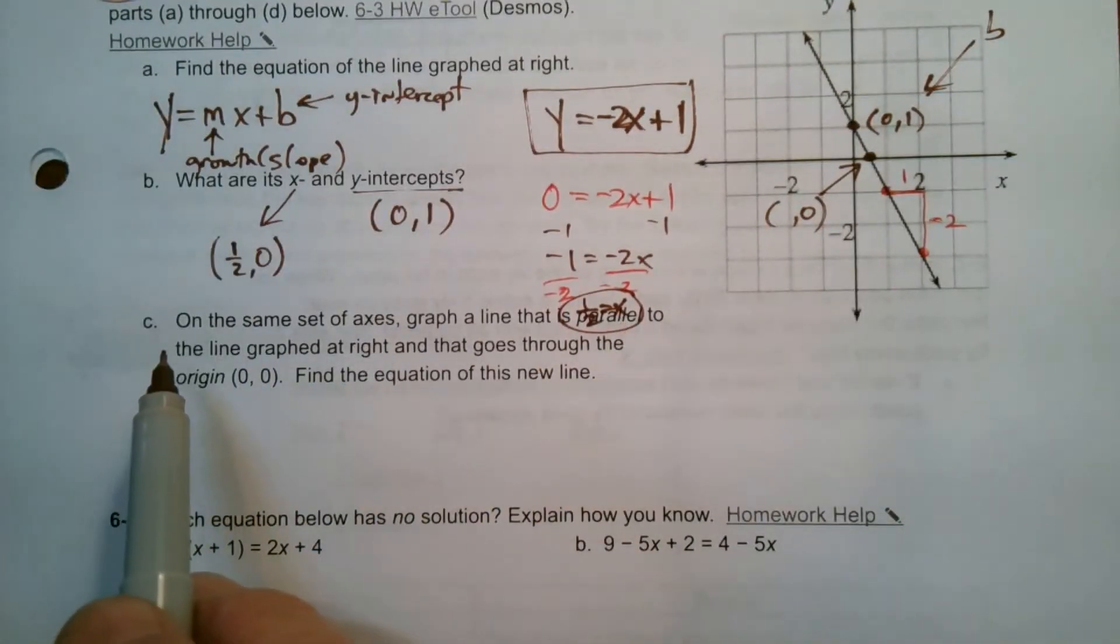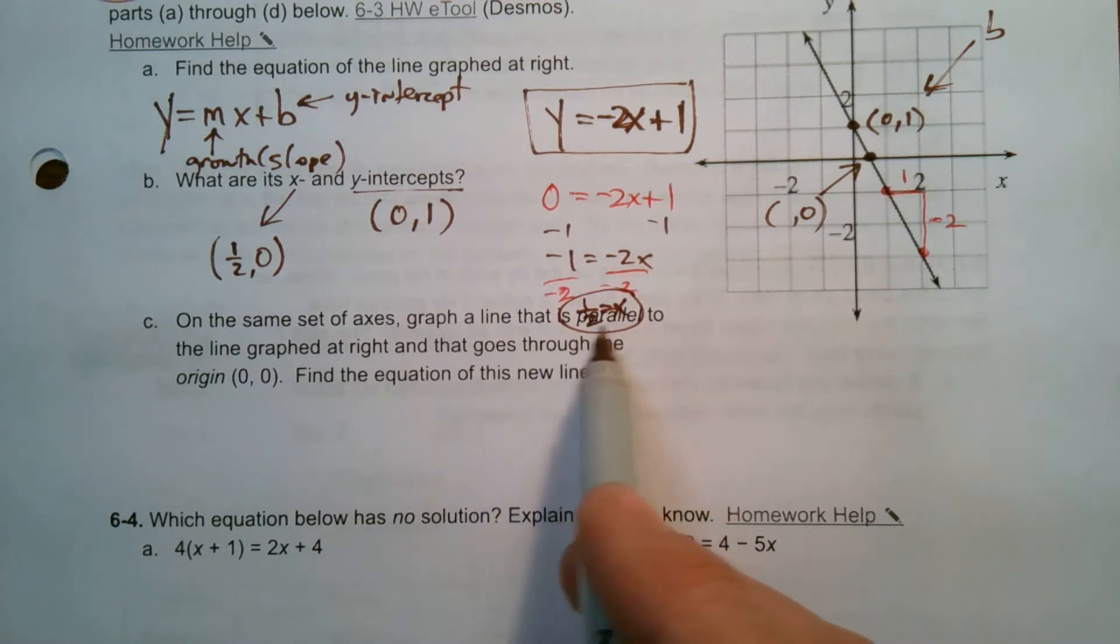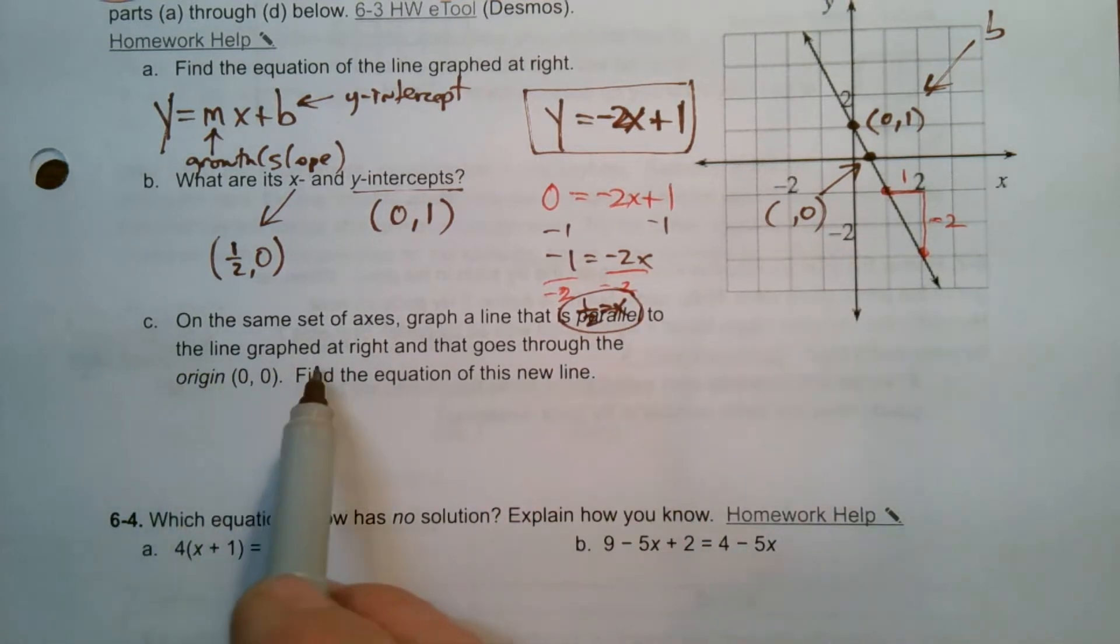All right. Let's answer the next one. So on the same set of axes, graph a line that is parallel to the line graphed at the right. And that goes through the origin 0, 0. Find the equation of that line.